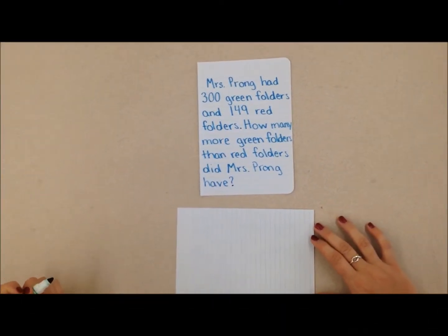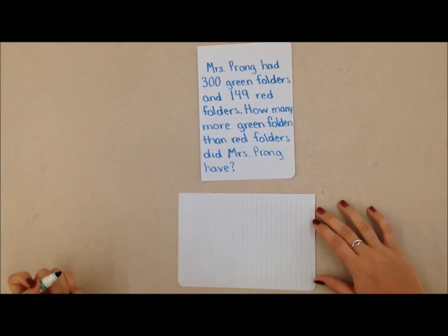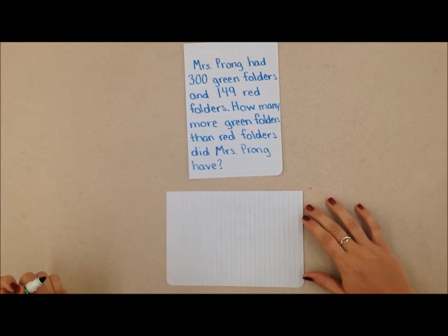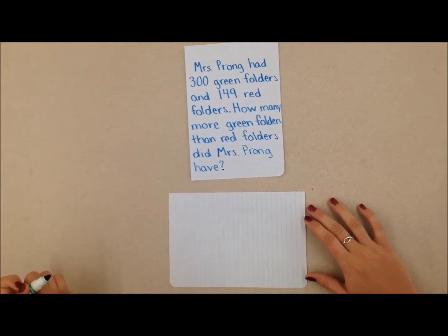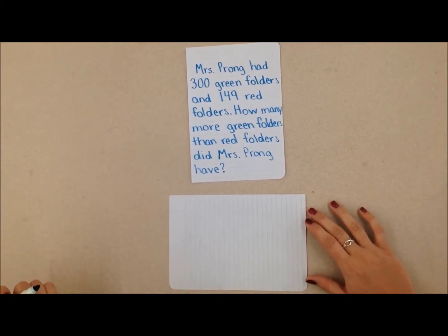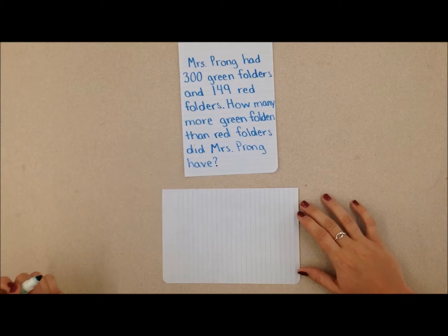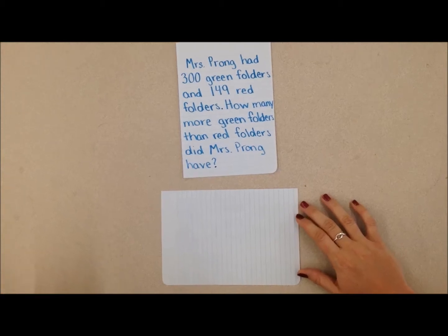Mrs. Prong had 300 green folders and 149 red folders. How many more green folders than red folders did Mrs. Prong have?